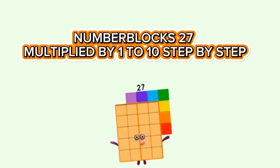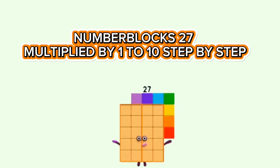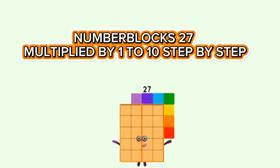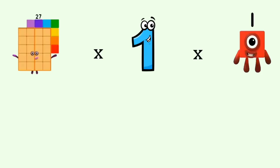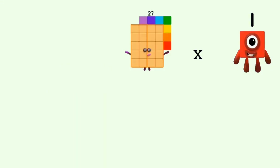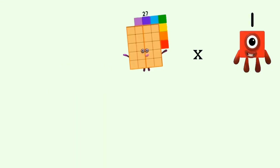Number Blocks: 27 multiplied by 1 to 10, step-by-step. 27 times 1 equals 27.